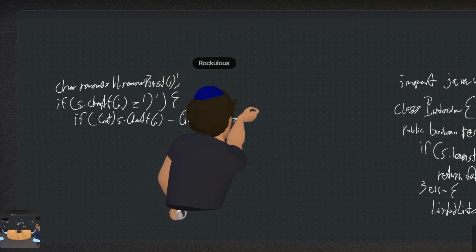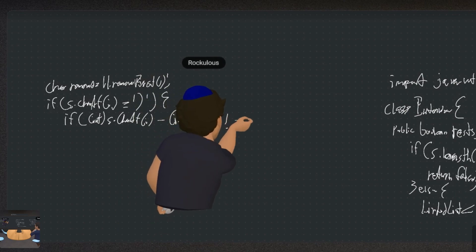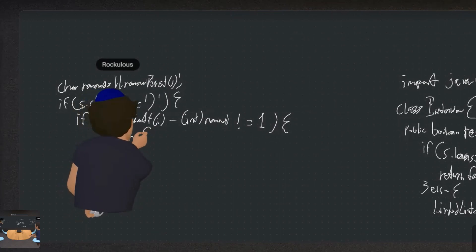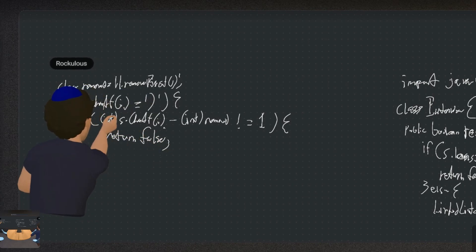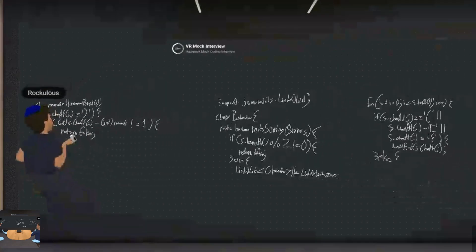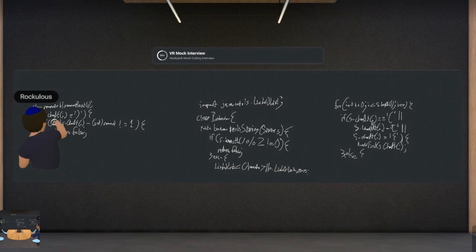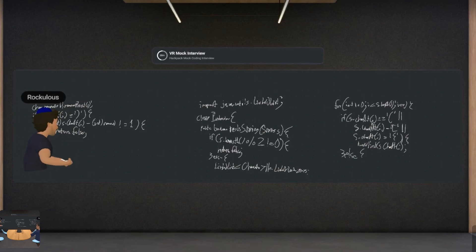If it doesn't equal one, then we return false. In Java you can up-convert a char to an int, which gives you the numerical ASCII value of the character. So I'm saying we've shown the character in the string at this point is a closed parenthesis — we subtract the ASCII value of that parenthesis from the removed character's value, and if they don't equal one we know there hasn't been a matching open parenthesis, so we return false.